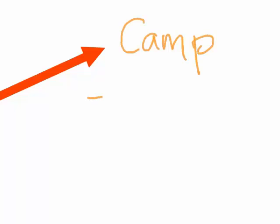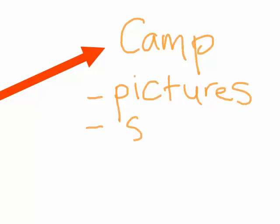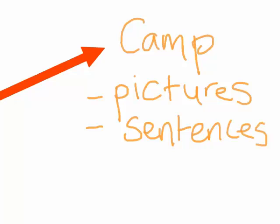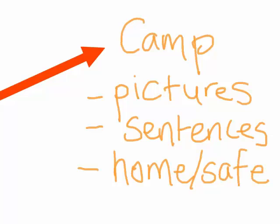What we can do is create a social story that shows lots of pictures about what the camp looks like. There can be sentences relating what the day-to-day activities may be, and it can also let them know that they're going to be coming home, that they will be safe, and their family will be home to meet them. In the following pages I'll show you an example of a social story that I've created.